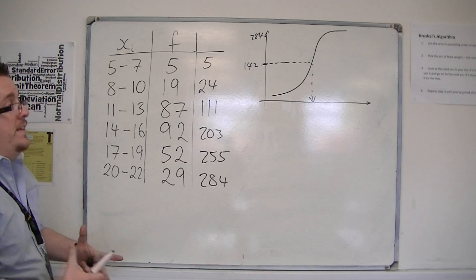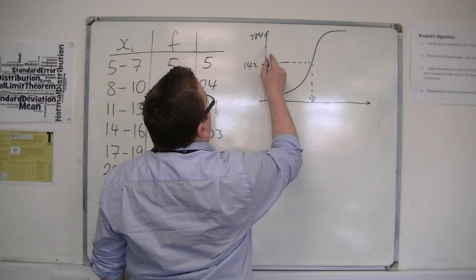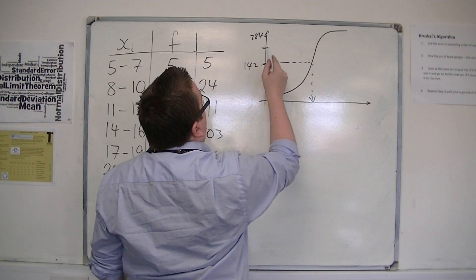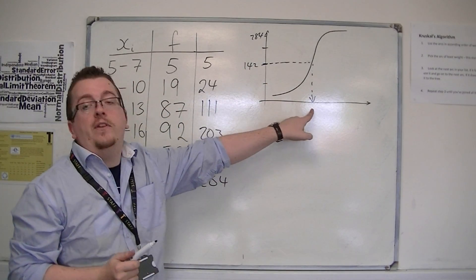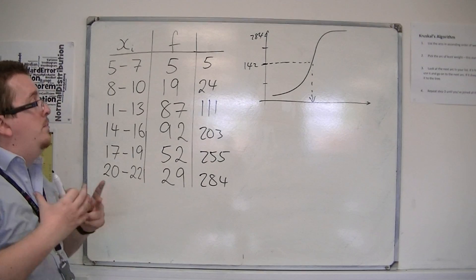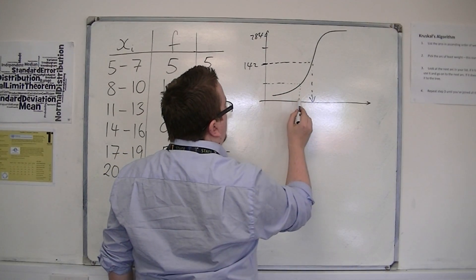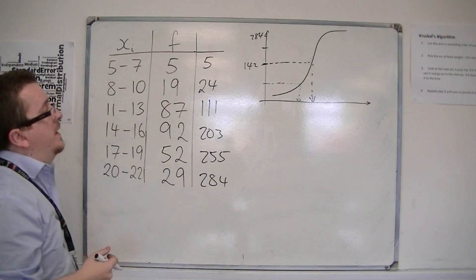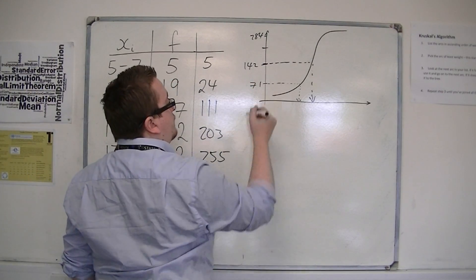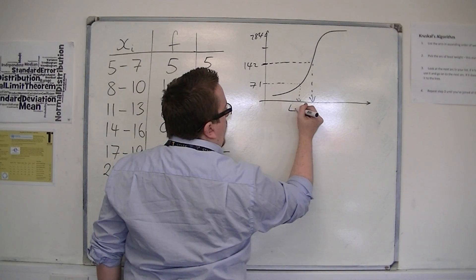When we did this, this was really only an estimate. And you would also do the same if you wanted the upper and lower quartile. Because this would give you your 50th percentile, the halfway point. If you wanted 25%, then you would have this value, which would be half again, so 71.